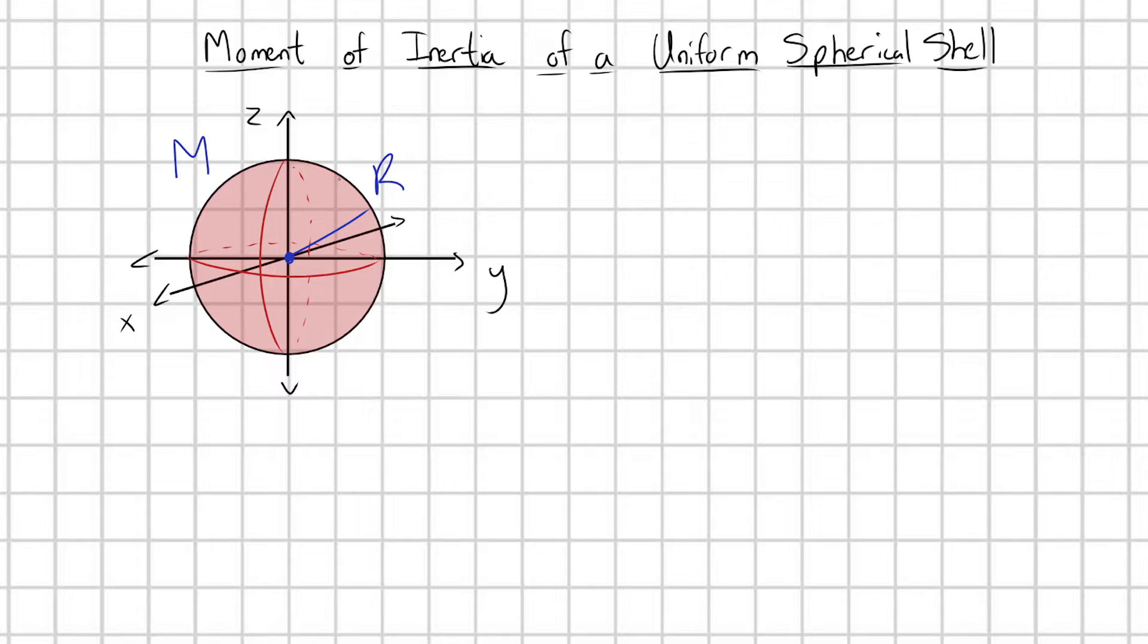It has infinitesimal thickness, right? There's no thickness to this spherical shell at all. It has some radius r and some mass m, and of course a uniform mass density.